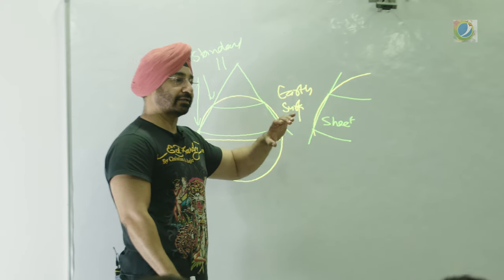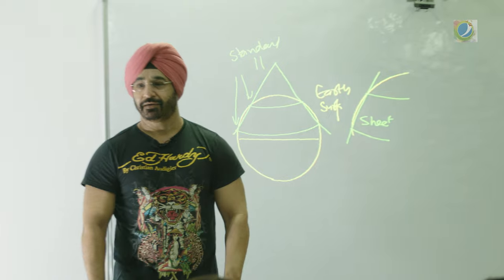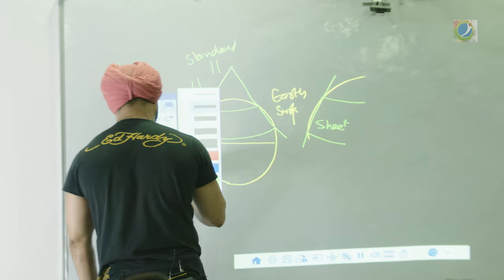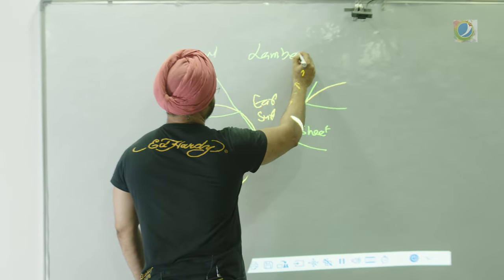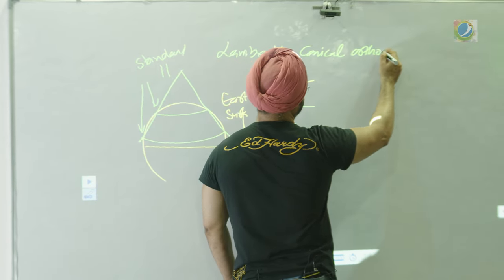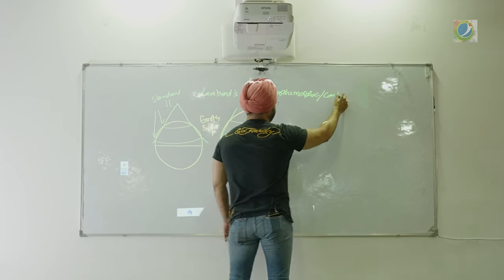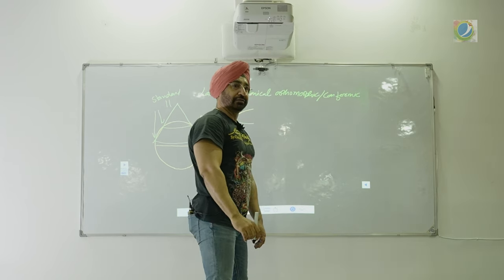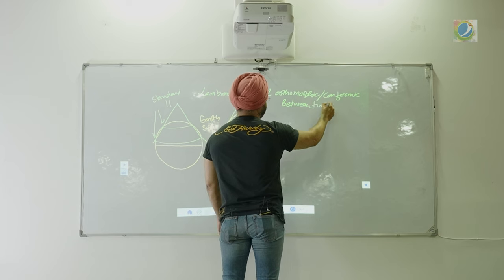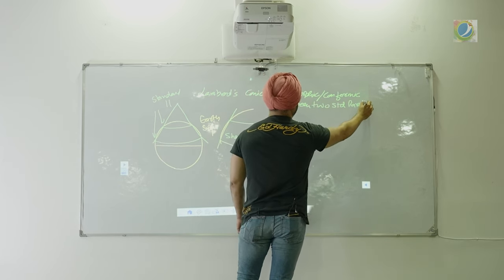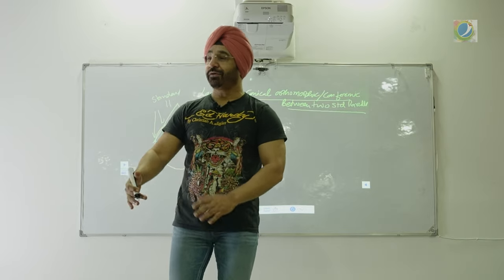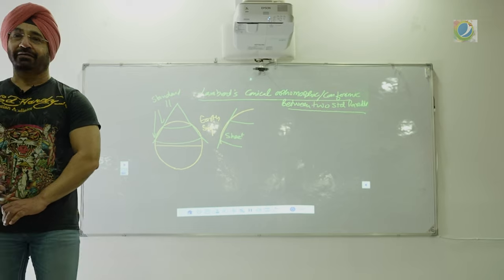That is why the scale is considered constant within these two standard parallels. The person who formalized this gave it the correct name: Lambert's conical orthomorphic, also called conformal — it conforms to direction. We normally call it Lambert's orthomorphic conical projection, or Jeppesen conical conformal projection.